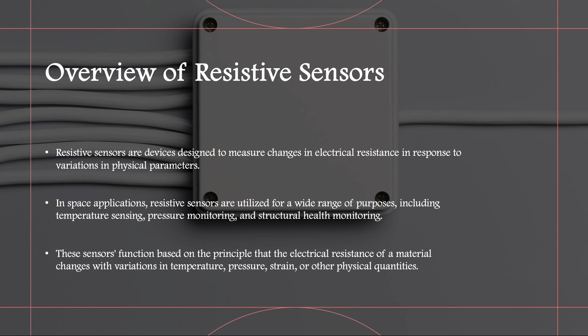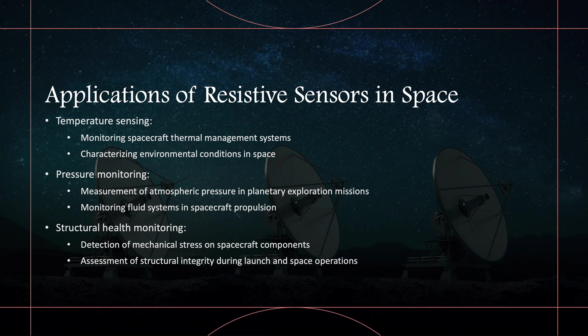Applications of resistive sensors in space. Resistive sensors find widespread use in space missions due to their versatility and reliability. They are employed for temperature sensing to monitor spacecraft thermal management systems and environmental conditions. Additionally, they play a crucial role in pressure monitoring, measuring atmospheric pressure in planetary exploration missions and spacecraft propulsion systems. Moreover, resistive sensors are utilized for structural health monitoring, detecting mechanical stress on spacecraft components and ensuring structural integrity during launch and space operations.